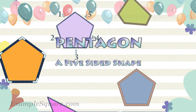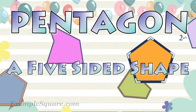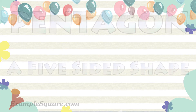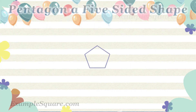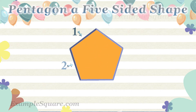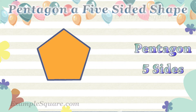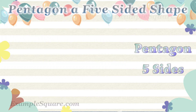Pentagon, a five-sided shape. What is a five-sided shape or a five-sided polygon? A five-sided shape or a five-sided polygon is called a pentagon. A polygon in general is a two-dimensional closed shape having three or more straight sides.